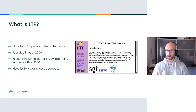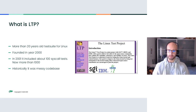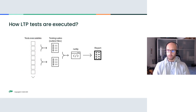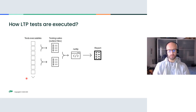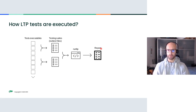Most of them have been written over the years because historically it was a messy code base. The situation we have when testing with LTP is the following: we have test executables, testing suites which associate labels with binaries, and run_ltp which takes testing suites and provides a report after execution.